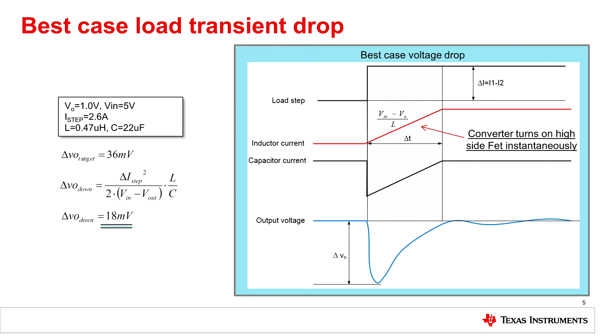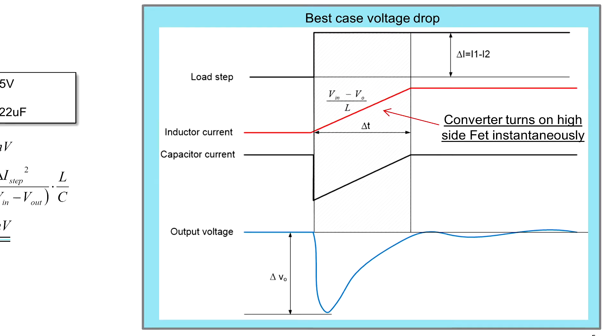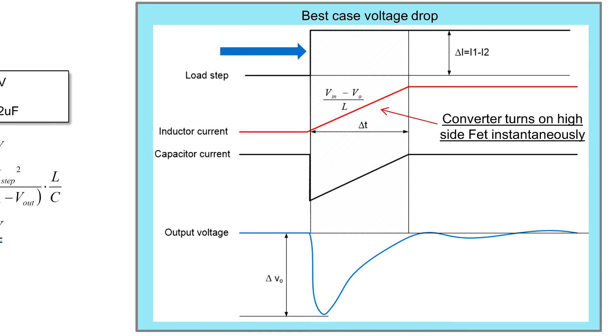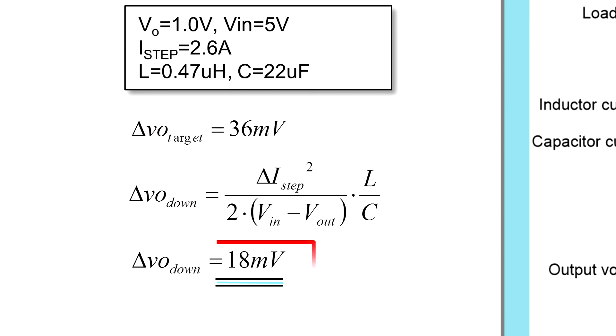Let's calculate the required output capacitor to meet this window. We will start with the best case. So the load step takes place, the inductor current ramps up and the output capacitor provides the remaining current. Therefore we have an output voltage drop we can calculate. In this case 18mV with a 22µF output capacitor.